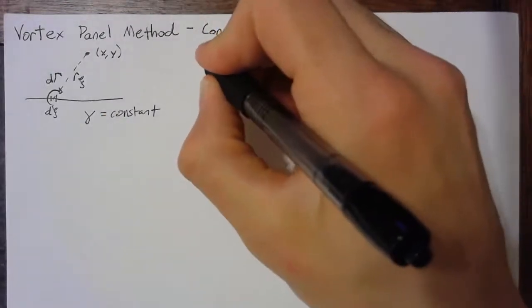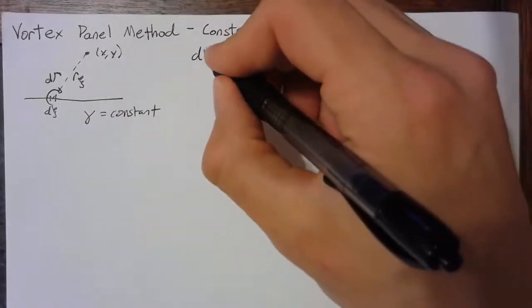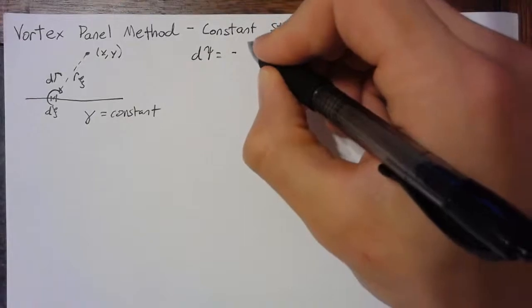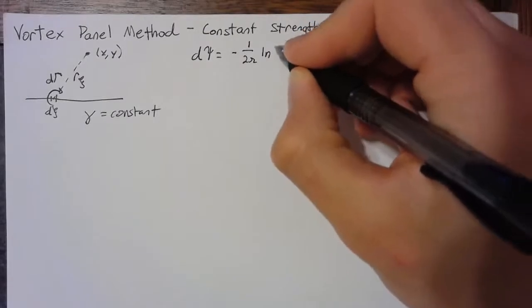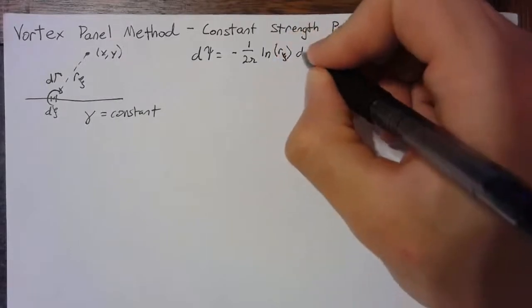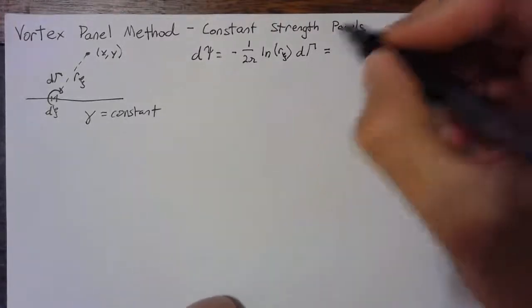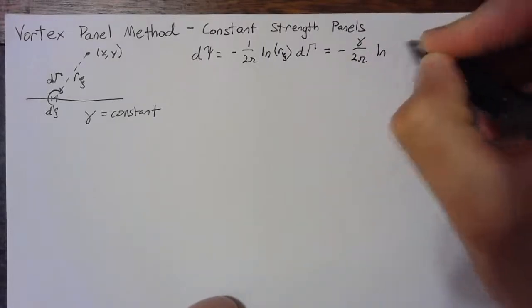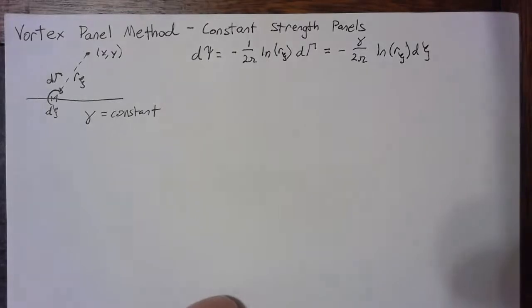Starting with the stream function, we want to look at the influence of each section. The differential stream function is going to be equal to negative 1 over 2 pi times the natural log of r xi, multiplied by d capital gamma. When we substitute in our d gamma, we end up with negative lowercase gamma over 2 pi times the natural log of r xi times d xi.